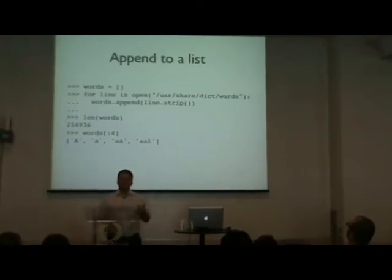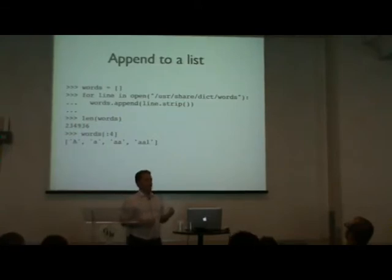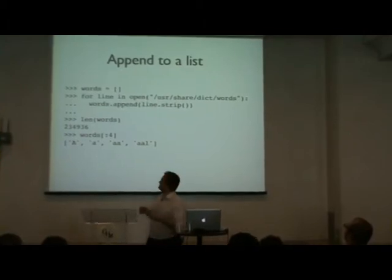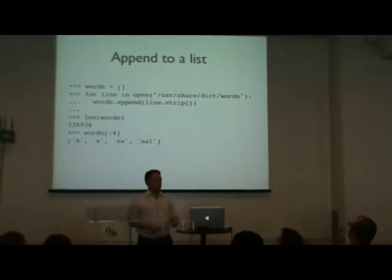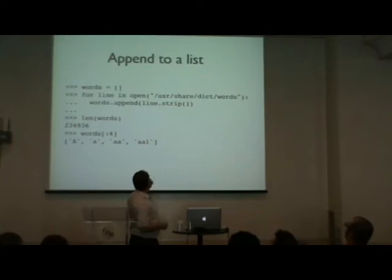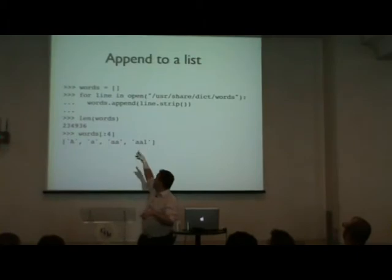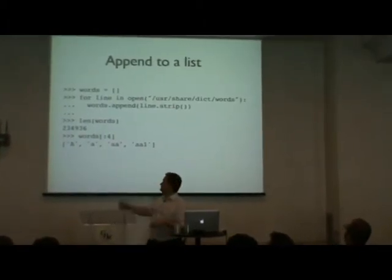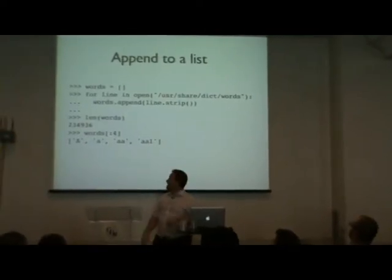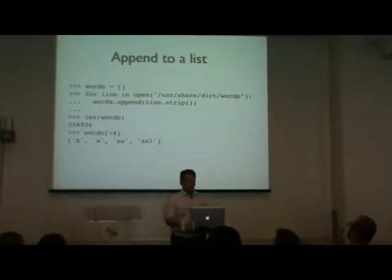People don't just want to use a list as a lookup — they want to do things with it. The most common thing you do is append. Here I read lines from a file containing about 235,000 words in my local dictionary. I strip them and append each one to get my whole word list, which contains words like lowercase 'a', 'lava', and many words I've never seen before.